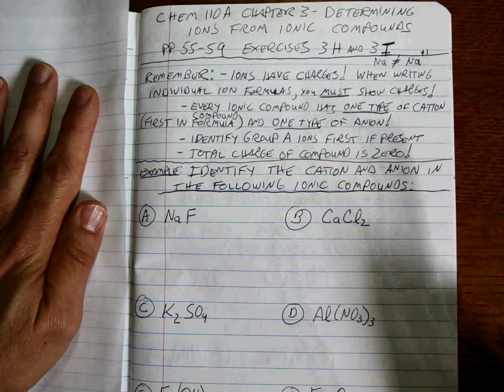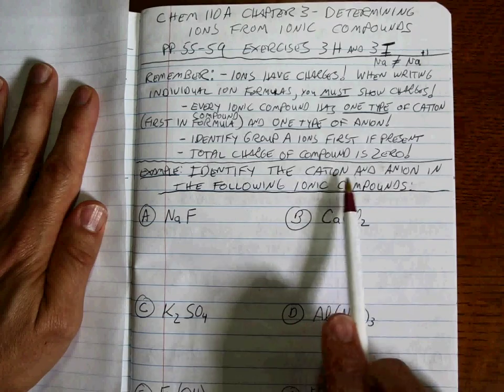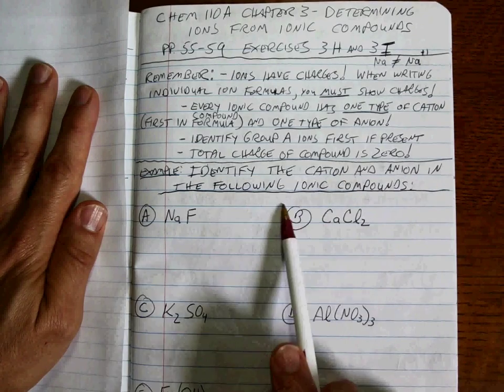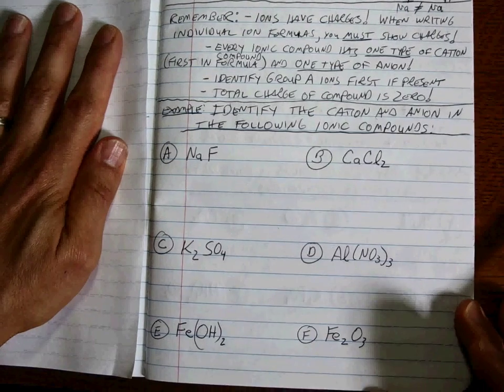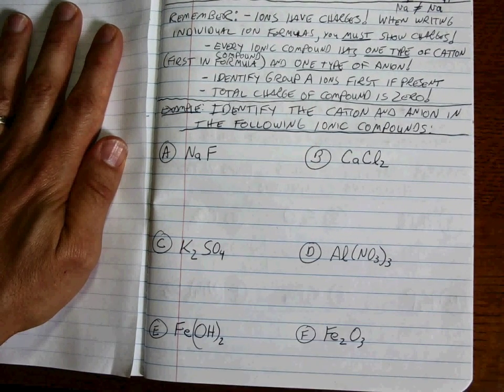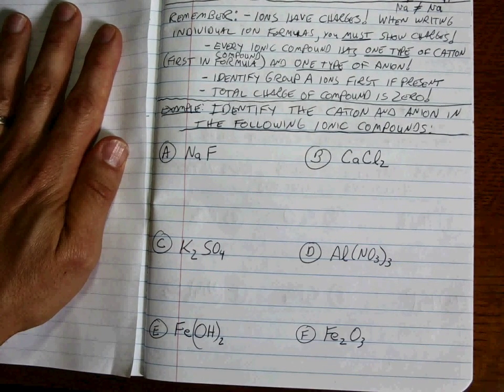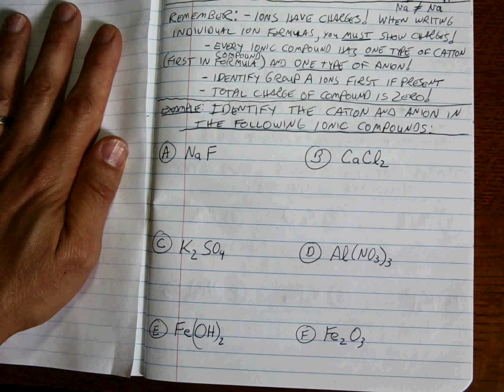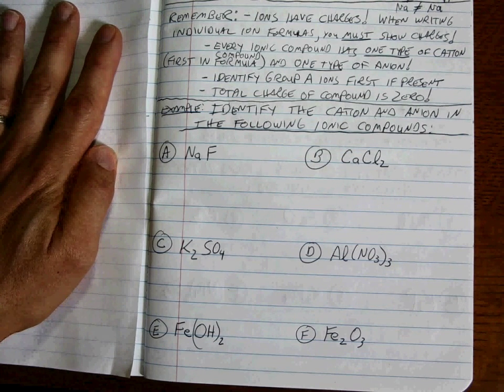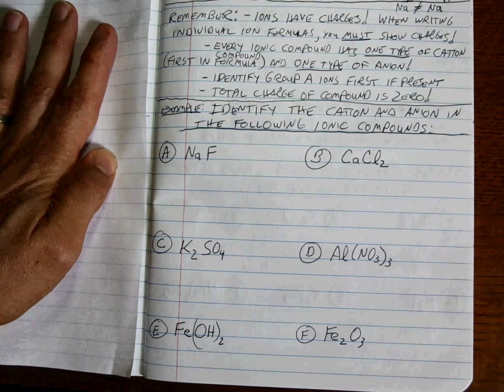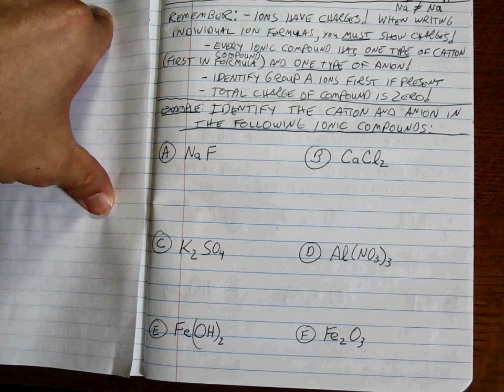So the way the question will be asked is identify the cation and the anion in the following ionic compounds. Let me move this up. There they are. Write them down. See if you can tell me which the cation is, which the anion is after hitting pause and working it through. Then we'll come back and see how I do it. Hopefully you did it the same way. Hit pause.